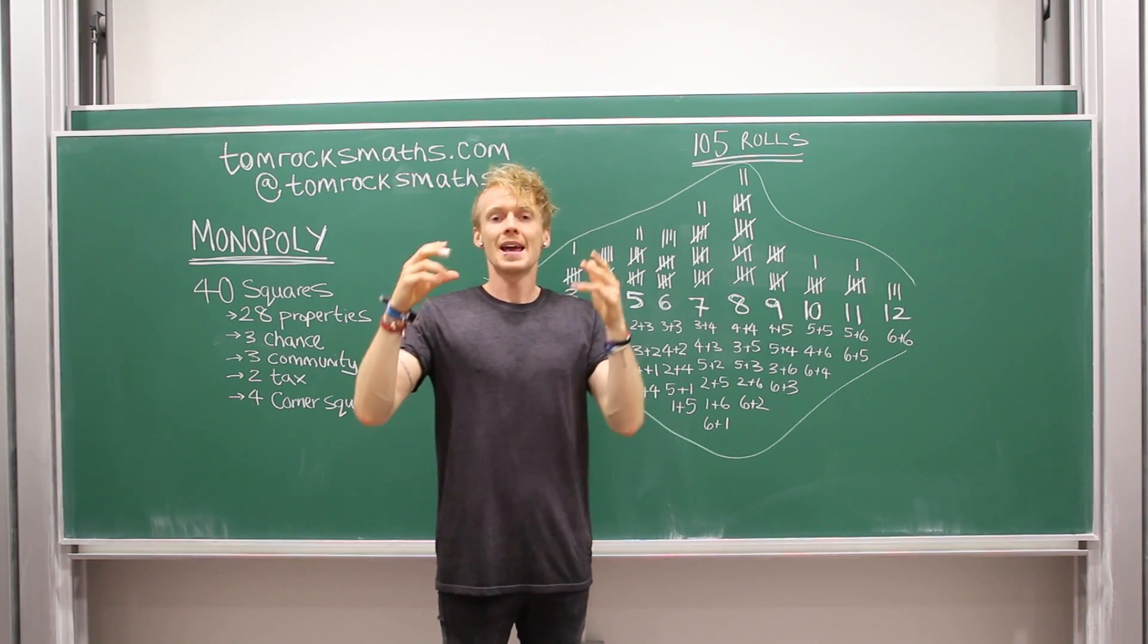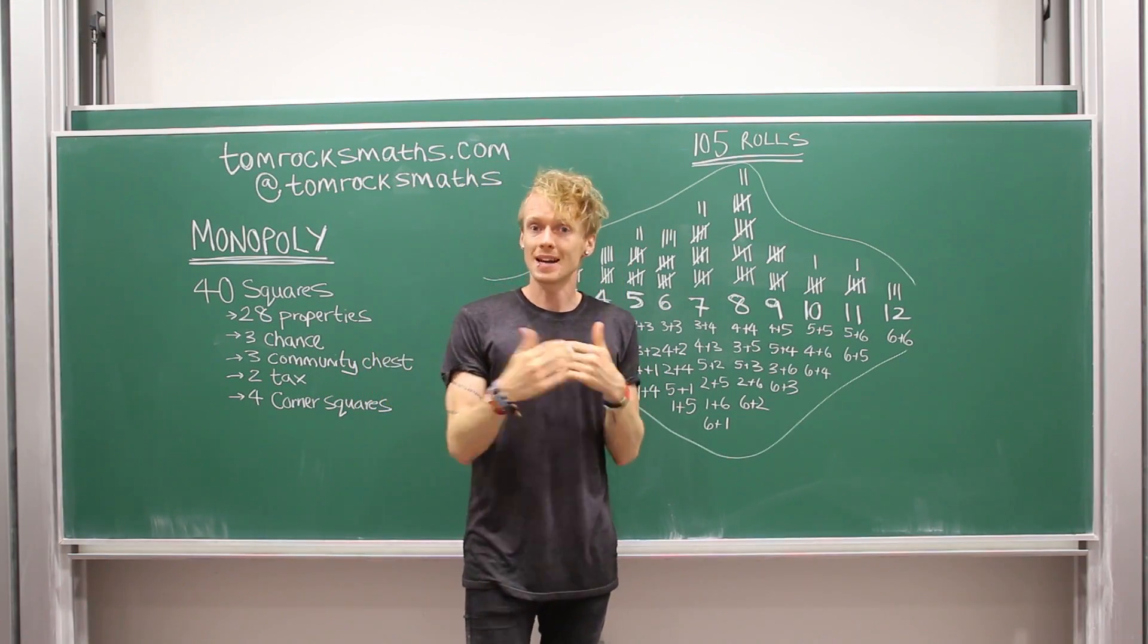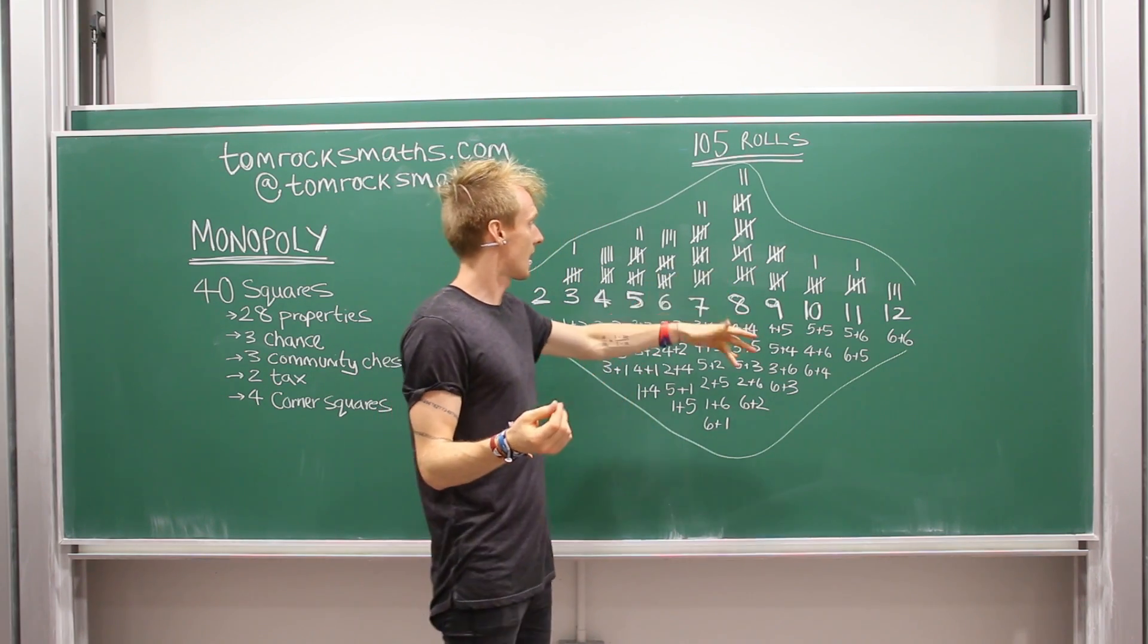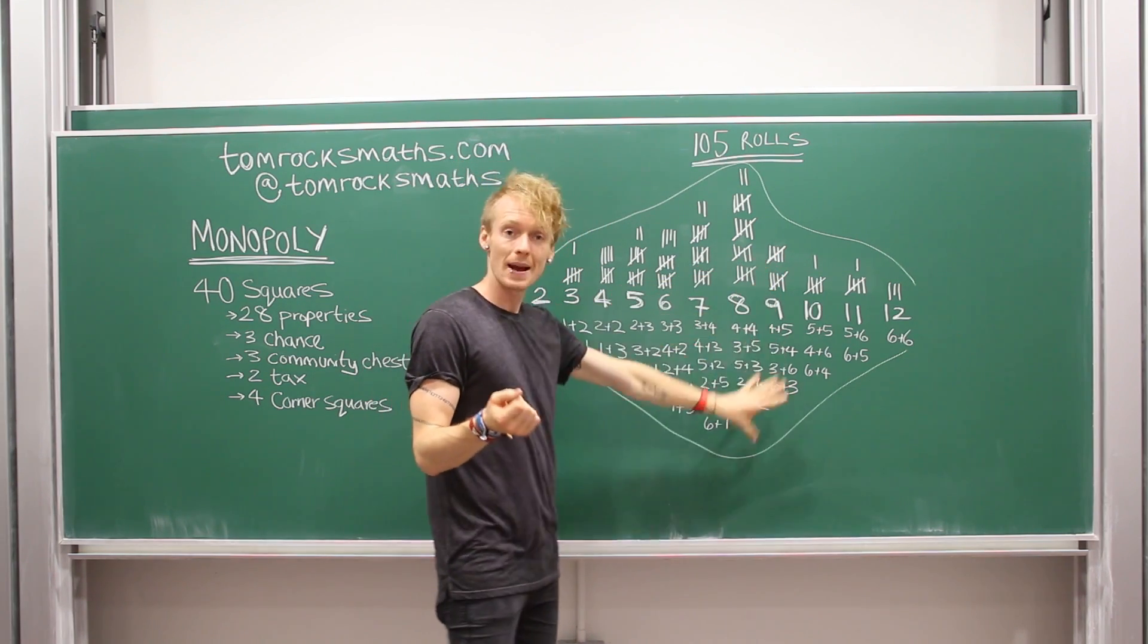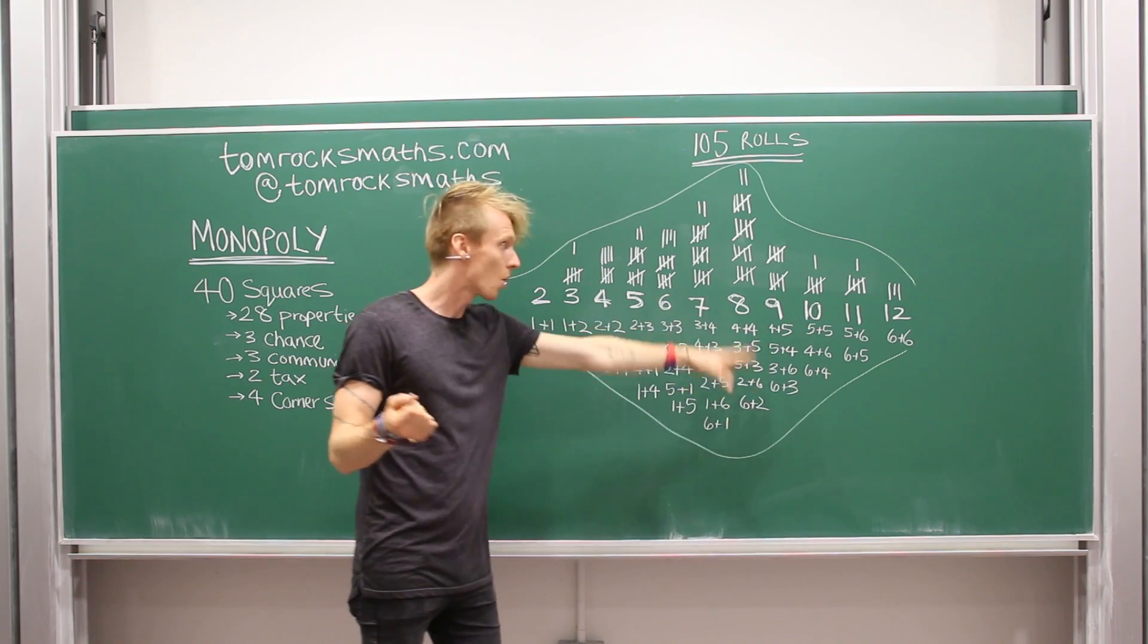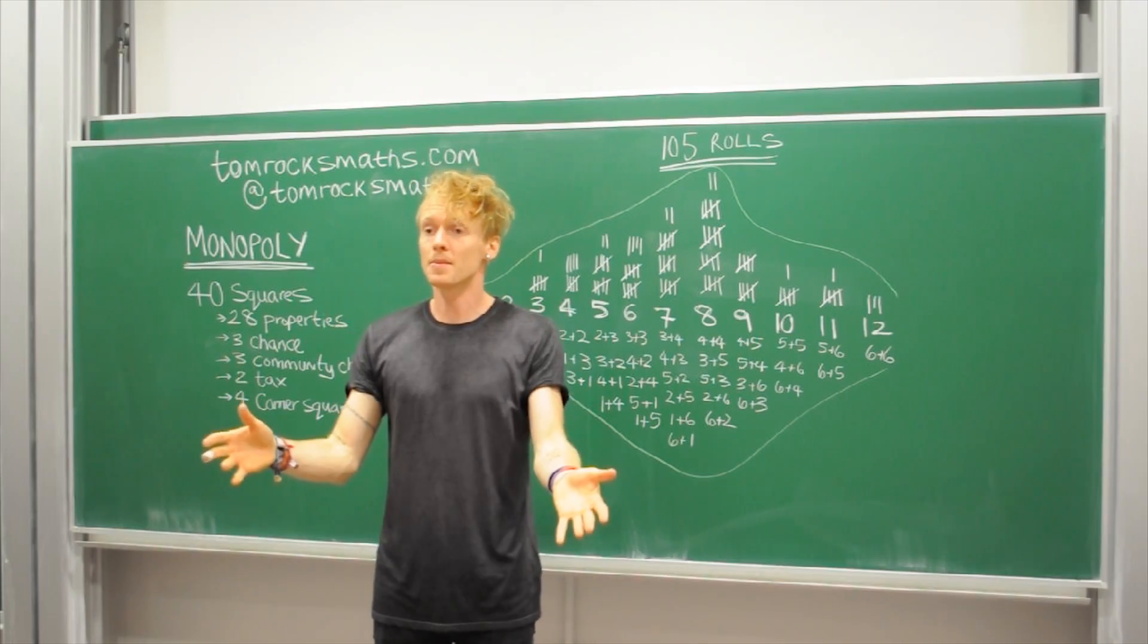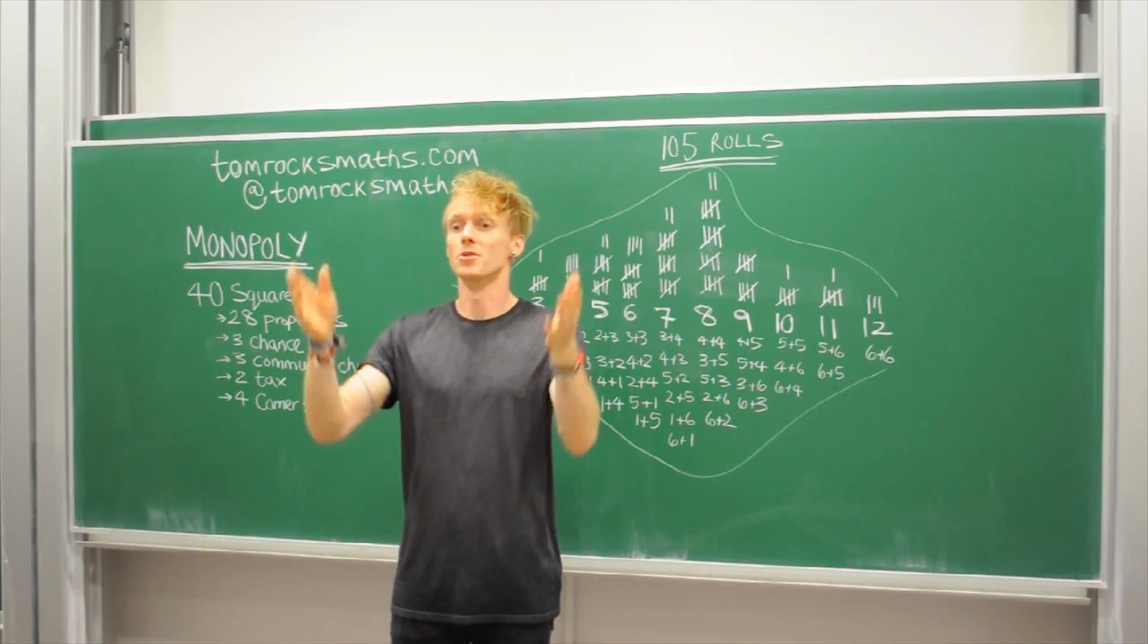The third and final orange property that you would need to be able to buy those houses and hotels, get those big bucks is on space nine. So it's nine spaces from jail. And again looking at our results and the expected result nine is also quite likely to be rolled.